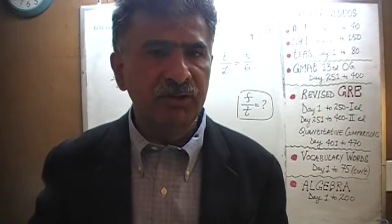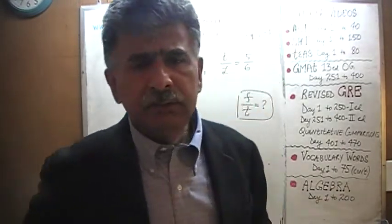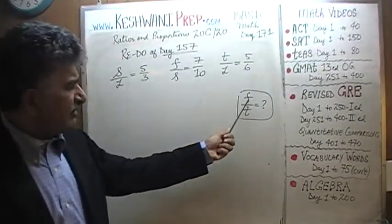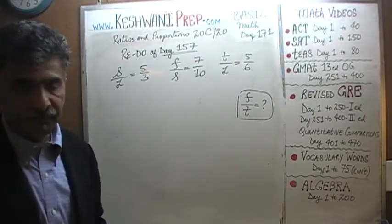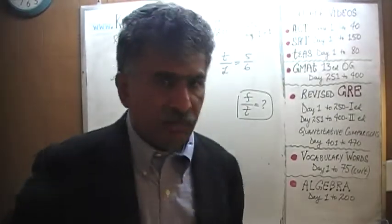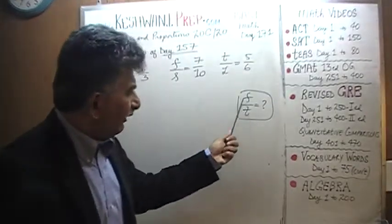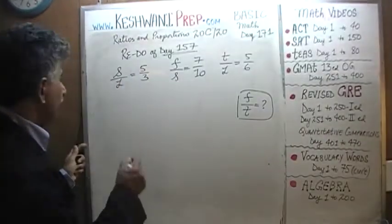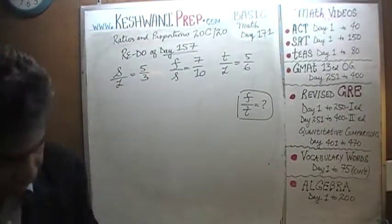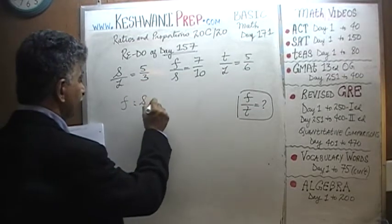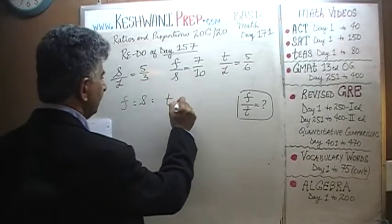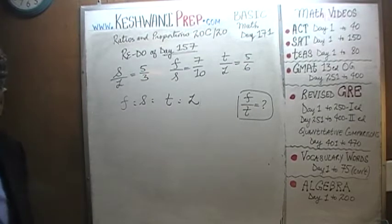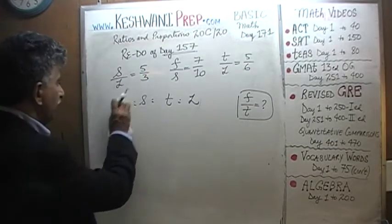If you ask your math teacher to help you with this problem, he or she will do the problem in the exact same manner that we did — the person will look for this exact specific ratio, F to T and nothing else. It's counterintuitive: if you look for just F to T by itself, it actually takes much longer than trying to find the ratio of F to S to T to L. These are the four variables. If you look for the ratio of all of these in one shot, it actually takes less time. I'm going to show you how.